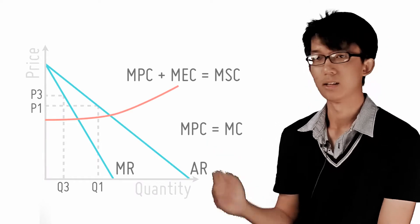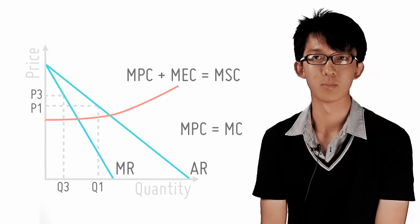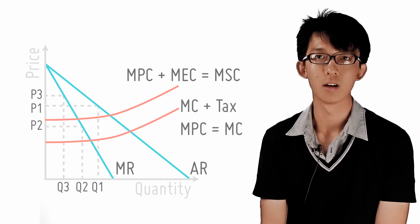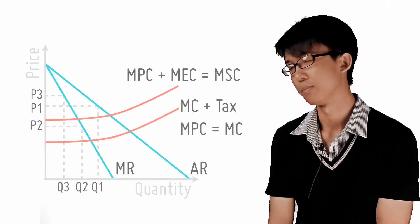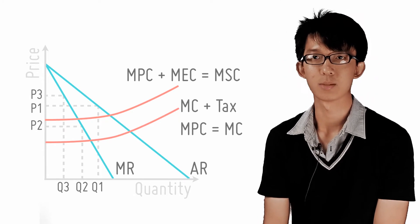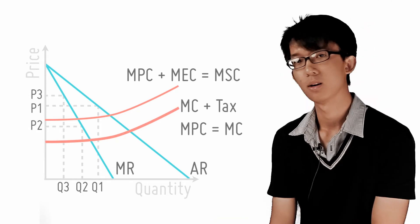Since firms produce at MC equals MR, the tax has to be less than the total externality to achieve the optimal output of Q2. Otherwise, the firm will just produce at the less than optimal level of Q3.